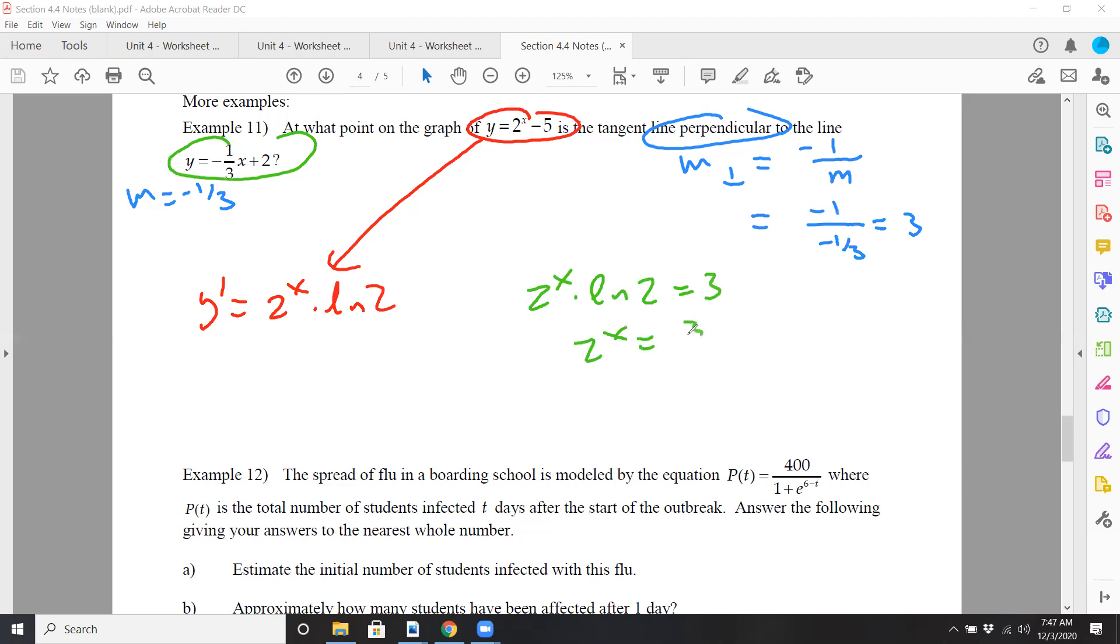So 2 to the x equals 3 over natural log of 2. Now, solve for x, you're going to convert that to a log. So it would be log base 2 of 3 over natural log of 2. And then you can actually use a calculator to kind of work out the rest of that. So that would be roughly 2.113.